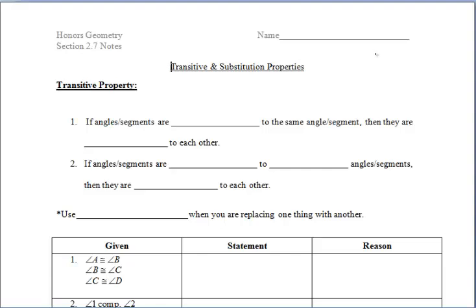In section 2.7, we'll be focusing on the transitive and substitution properties. Sometimes these properties are easy to mix up, so we want to make sure that we're using the definitions of the properties as well as the accompanying examples to help guide us through this.